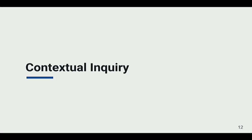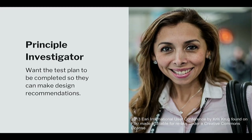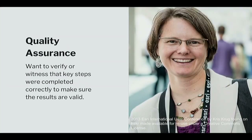First, the principal investigator is the scientist who wants the test plan completed so they can make design recommendations — is this heat shield material good, will it work for the mission, and how much do we need? The quality assurance role wants to verify or witness key steps to make sure they're completed correctly. For some critical steps, like making sure the correct test article is installed, a QA representative has to actually observe the task being completed and sign off. A verification is for steps that can be confirmed after the fact.